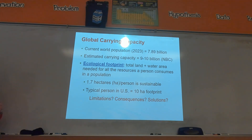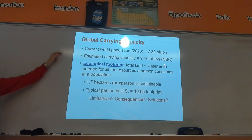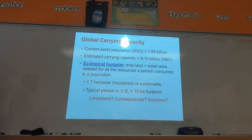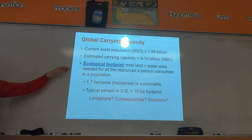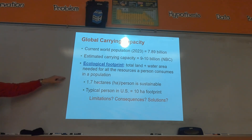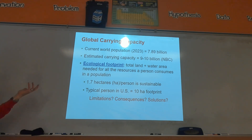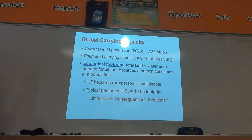As of when this slide was made, the global population was 7.89 billion, and the estimated carrying capacity for humans is 9 to 10 billion according to NBC — meaning world population is starting to approach that estimated carrying capacity. The ecological footprint is the total land and water area needed for all the resources a person needs to survive and live. Globally, the sustainable amount is about 1.7 hectares per person, but in the US we're at 10 per person — worth thinking about what solutions could address that, beyond just the AP exam.